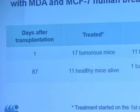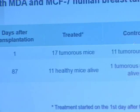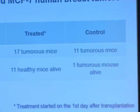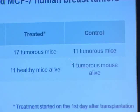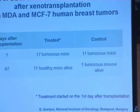In the very first animal experiment, we transplanted a breast cancer tumor into mice — 17 mice in the treated group and 11 in the control group. After 87 days, 11 mice in the treated group, which consumed deuterium depleted water, were tumor-free. In the control group, all animals had perished except one, which still had a tumor. The treatment started right after the day the tumor was transplanted.